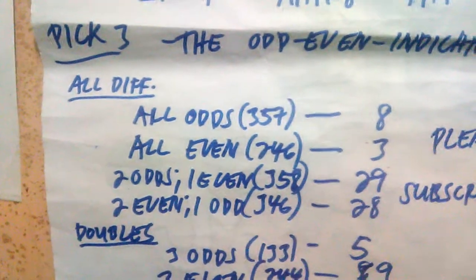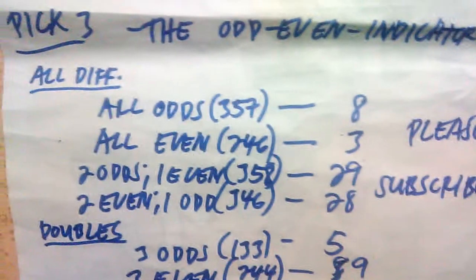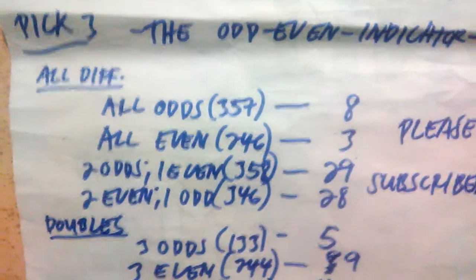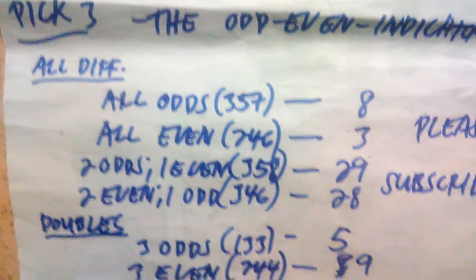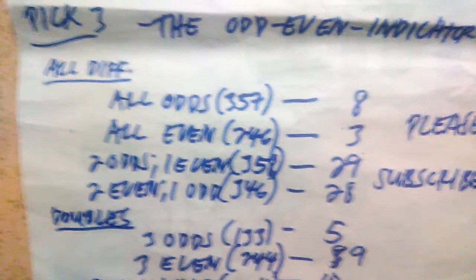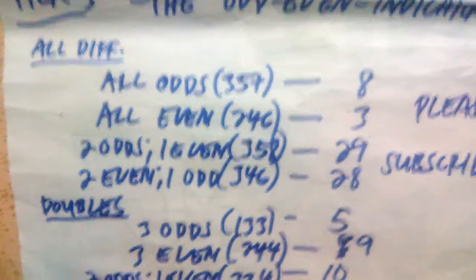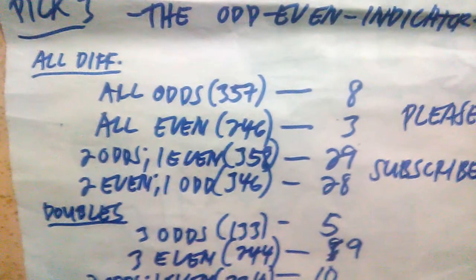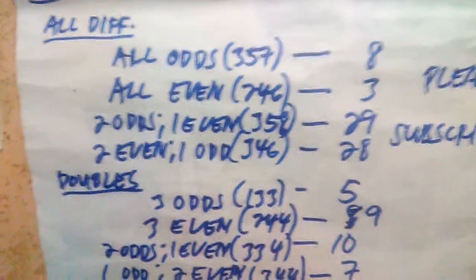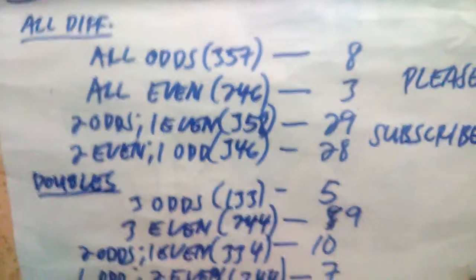Under all odd, meaning all numbers in the combination are odd — for example 3, 5, 7 — there were 8 out of the 100 past draw results. For all even, for example 2, 4, 6, there were only 3. Under 2 odds and 1 even, meaning 2 numbers are odd and 1 is even — for example 3, 5, 8 — there were about 29.